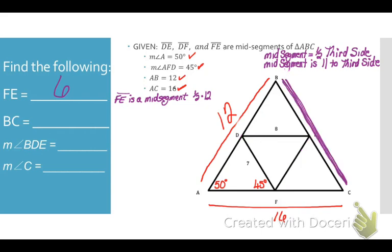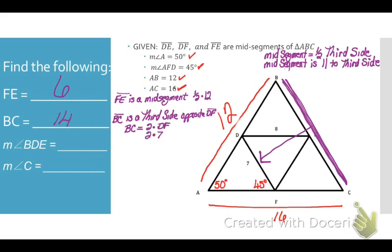Now let's look at BC — it is a third side opposite the mid-segment DF. A third side is exactly twice the length of the mid-segment, so it has to be twice the length of DF. The diagram tells us DF is 7, so the length of BC is 14.